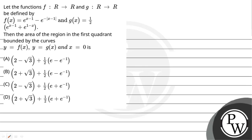Hello students, let us read the question. The question says: let the functions f such that ℝ → ℝ and g such that ℝ → ℝ be defined by f(x) = e^(x-1) - e^(-|x-1|) and g(x) = (1/2)(e^(x-1) + e^(1-x)). Then the area of the region in the first quadrant bounded by the curves y = f(x), y = g(x) and x = 0.